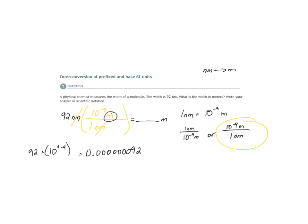So in scientific notation, our answer would be 9.2 times 10 to the negative 8. The reason it is negative 8 is because this is a very small value. The power should be negative, since the value is less than 1.